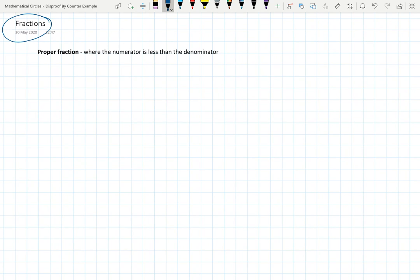So what is proper fraction? Proper fraction is simply when the fraction is written in p by q form. If p is less than q, that is numerator is less than denominator, then we call it a proper fraction.